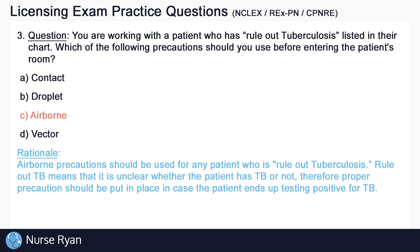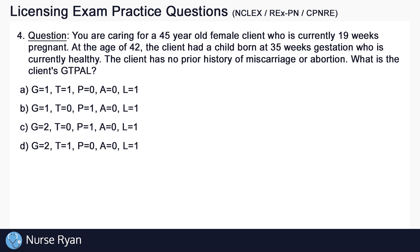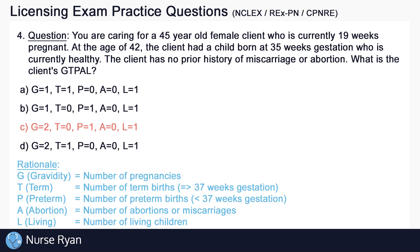Question number four: you are caring for a 45-year-old female client who is currently 19 weeks pregnant. At the age of 42, the client had a child born at 35 weeks gestation, who is currently healthy. The client has no prior history of miscarriage or abortion. What is the client's GTPAL? The answer is C. G, the number of pregnancies, is 2. T, the number of term births, is 0. P, the number of preterm births, is 1. A, the number of abortions or miscarriages, is 0. And L, the number of living children, is 1.